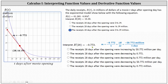Looking over the choices, the correct answer is the fourth choice: the receipts 28 days after the opening were decreasing by 0.772 million dollars per day. Notice it includes all the correct units. We don't include the negative because the negative indicates the receipts are decreasing. I hope you found this helpful.